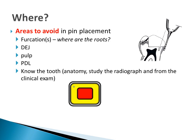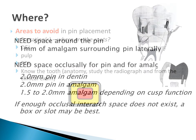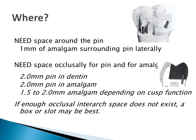Remember the anatomy — where are the roots? Mandibular molars have two roots, mesial and distal, with two furcations, while maxillary molars have three roots and three furcations. We need 1 mm of space around the pin to accommodate the amalgam. On the occlusal — that is, above the pin — we need 1.5 to 2 mm of amalgam, depending on the cusp being functional or non-functional.